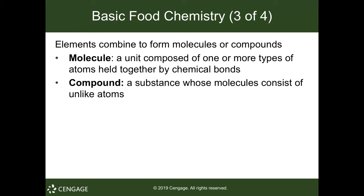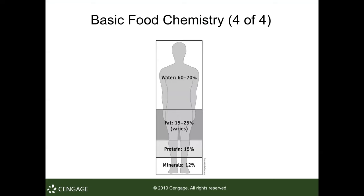Just a little refresher: a molecule is a unit composed of one or more types of atoms held together by chemical bonds. A compound is a substance whose molecules consist of unlike atoms — basically, a compound is many molecules put together. As far as what our body is made of, we have 60 to 70% water, which cannot really vary all that much.